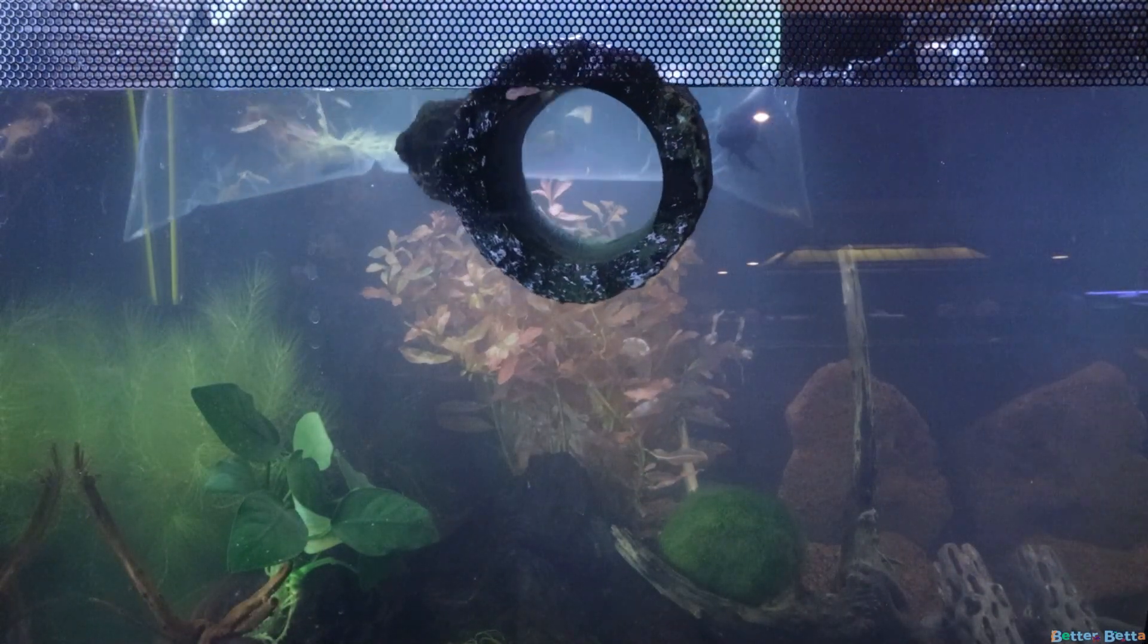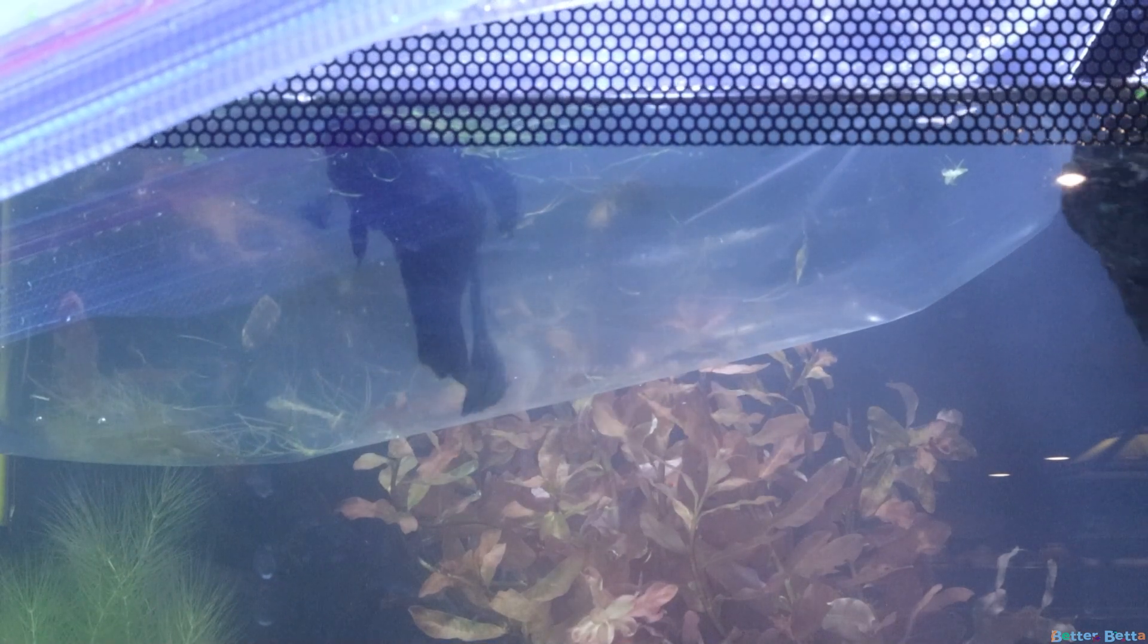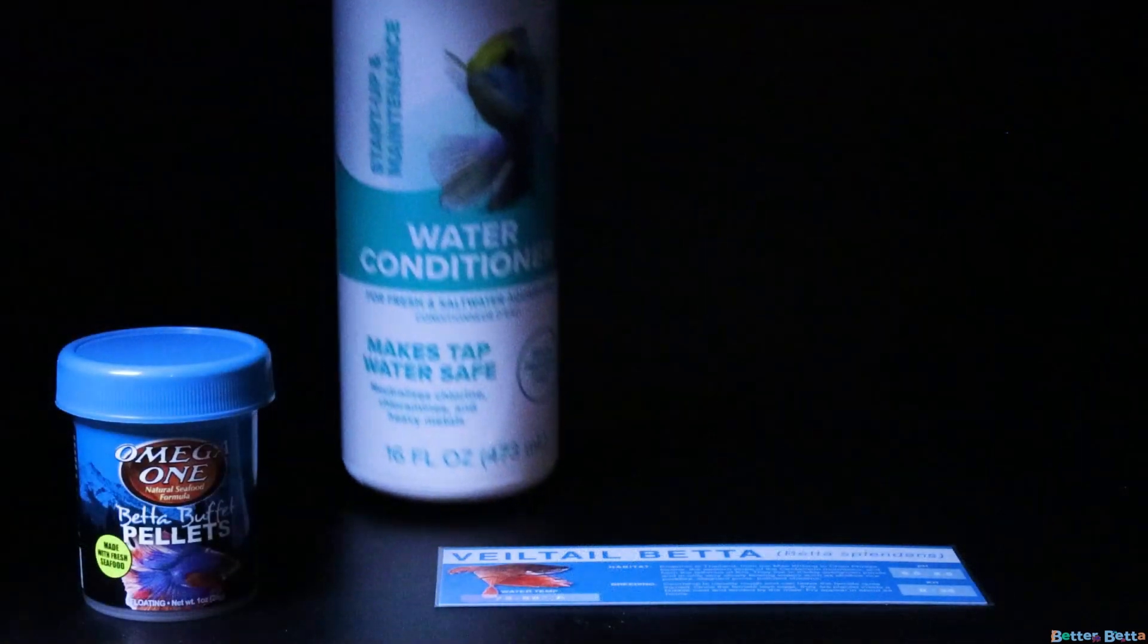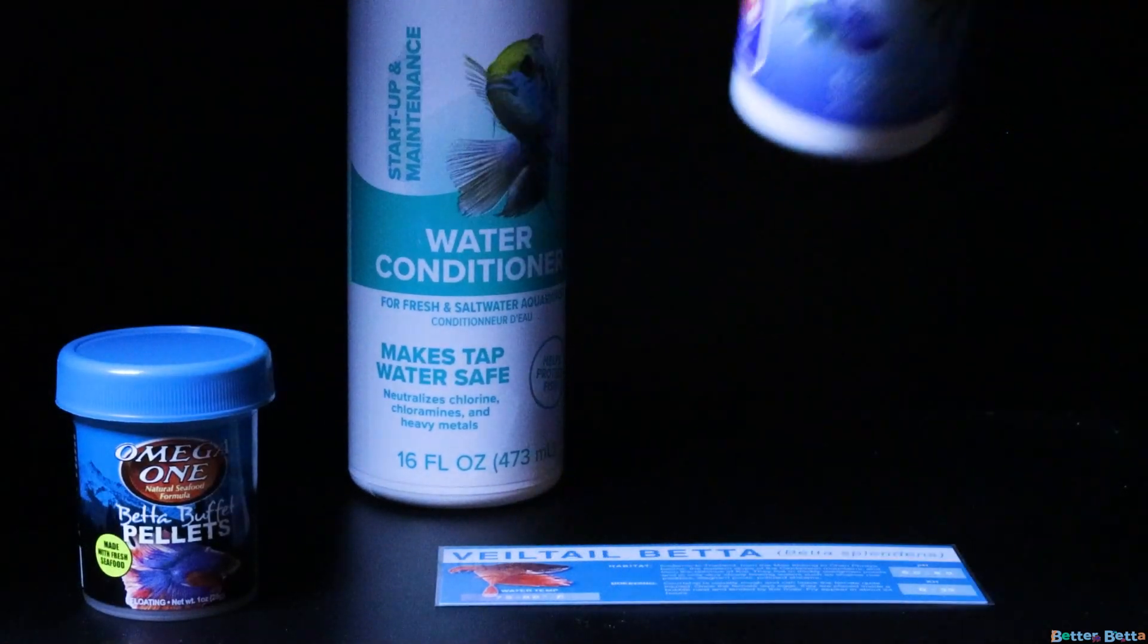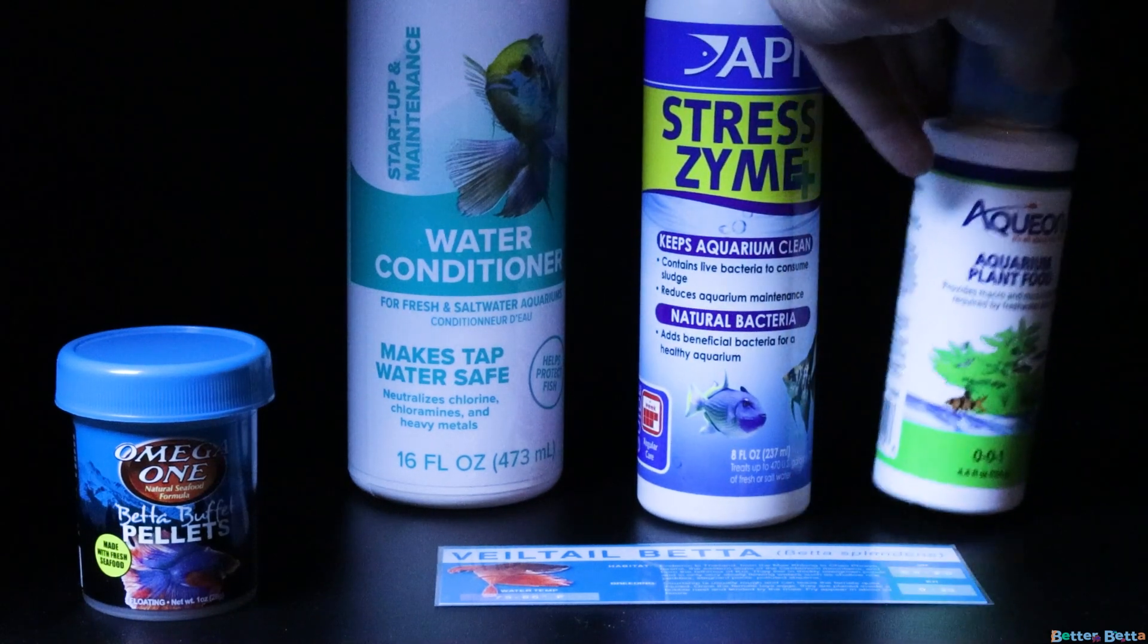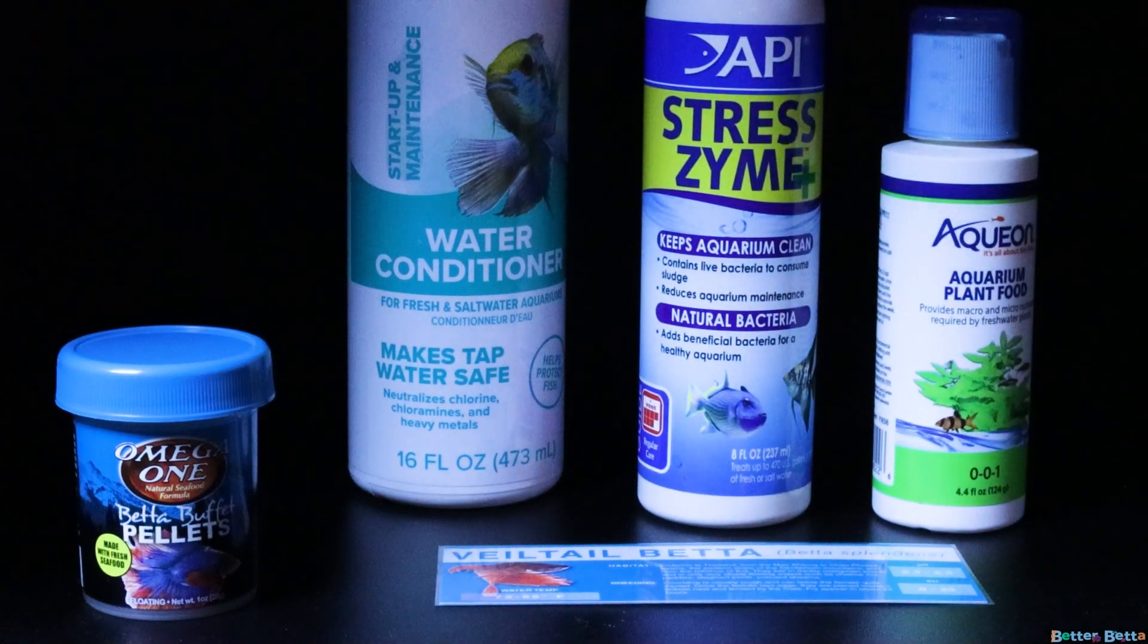And then I am beginning the acclimating process. While he's acclimating, I go ahead and add everything to my tank that I need to add. In this case, it's the water conditioner, a bacterial supplement because I essentially started my tank over, and also a general plant food that should work for all of my plants.